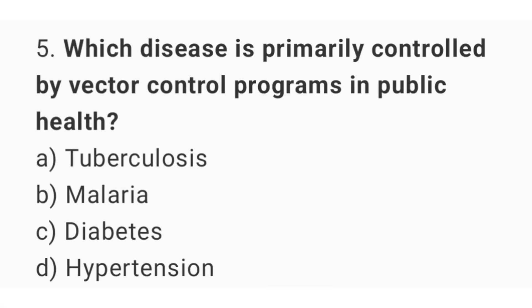Question number five: which disease is primarily controlled by vector control programs in public health? The right answer is option B: malaria.